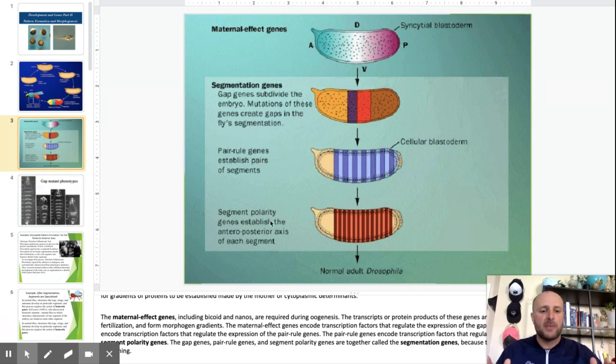All these genes are doing are setting up your body plan. This is how pattern formation happens. It's putting certain cells over here, certain cells over here, and we're getting ready to make the different parts of the body.